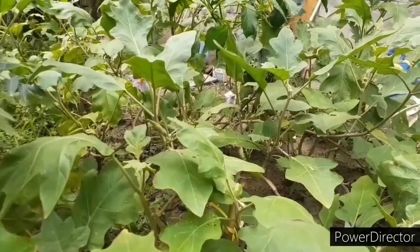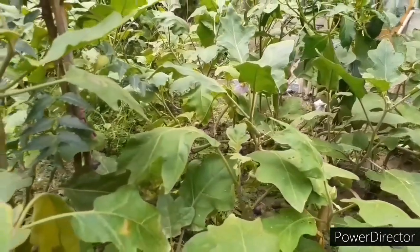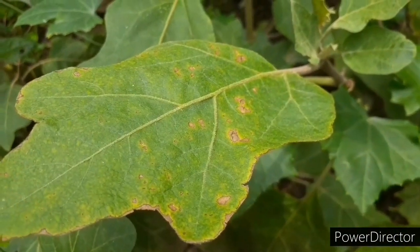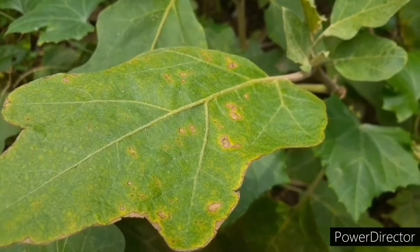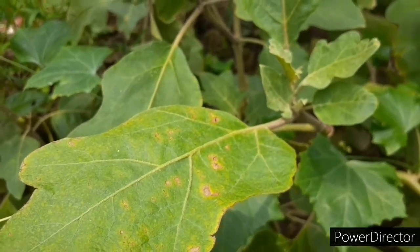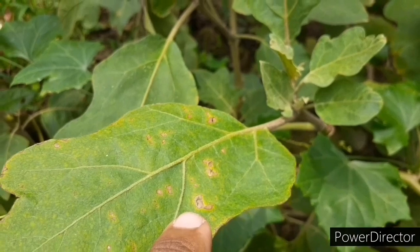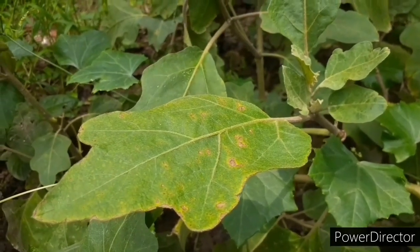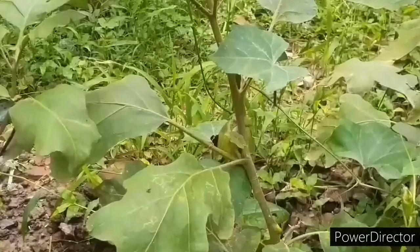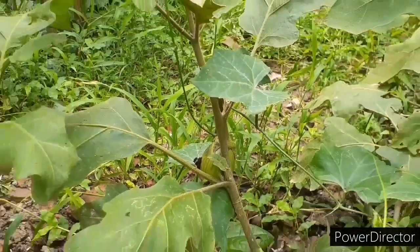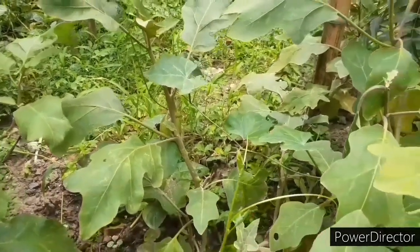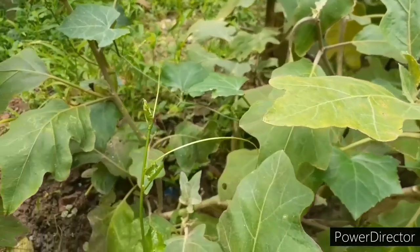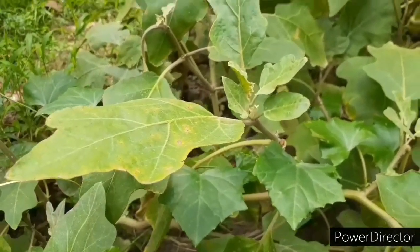This type of disease happens in brinjal and bean plants. The next disease is leaf blotch or leaf spot. As you can see, there are circular yellow spots on the leaf which later turn gray. The spots are circular with a yellow outline. This type of disease happens in brinjal, carrot, beetroot, and parsley plants. Leaf blotch can be stopped by applying or spraying Bordeaux mixture on the affected leaves or on the whole plant.